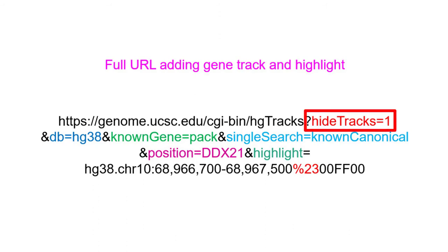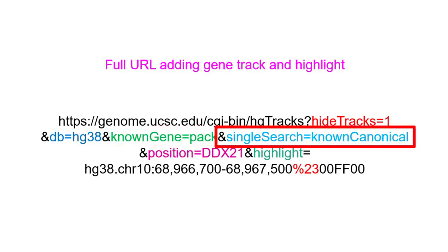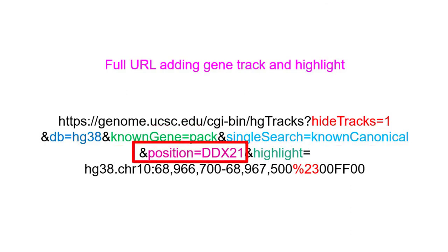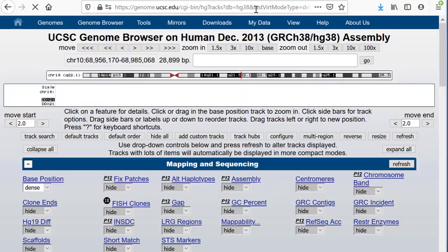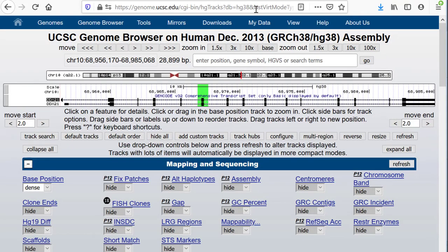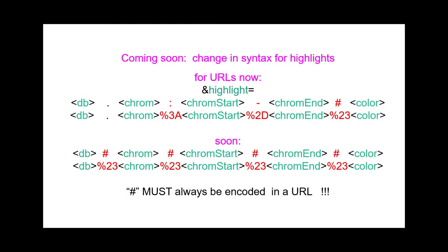Making the full URL will show the whole gene and highlight exon 6 in green. We have hide tracks, we have knownGene equals pack, we have singleSearch equals knownCanonical, and position equals gene DDX21, and then the highlight. This gives the full gene in the window with the exon highlighted green. While this video was in post-production, a change was made in the format for highlighting — when the change is released, all of the separators between data items will be hashtags, %23 in links.